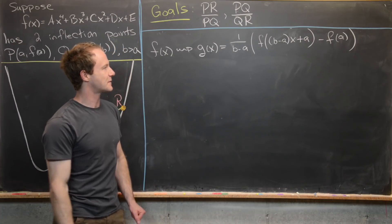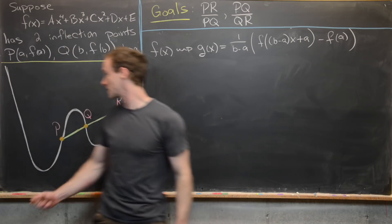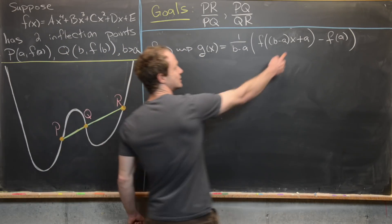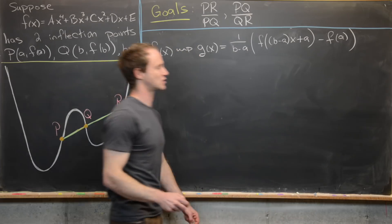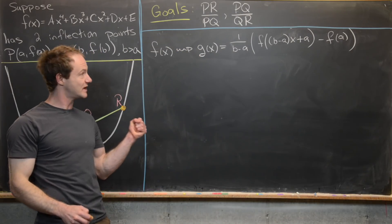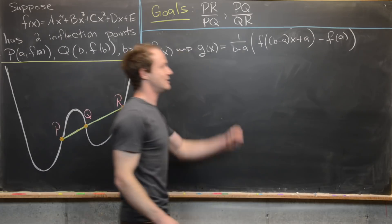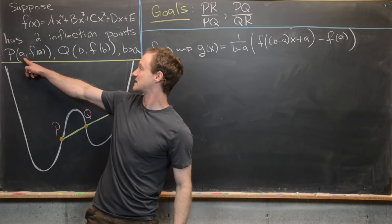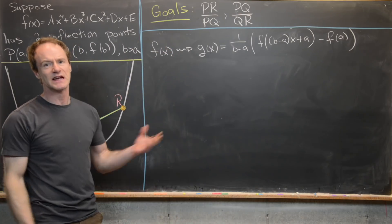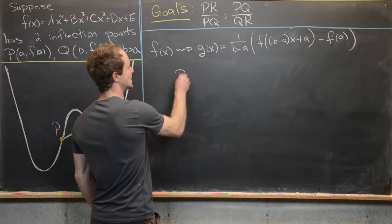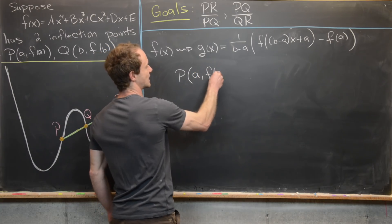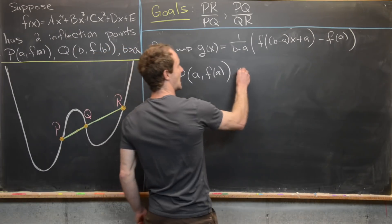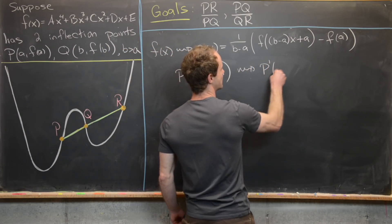This transformation shifts our original inflection point (A, F(A)) to the origin. The addition of A inside the argument shifts left by A units, and subtracting F(A) shifts down by F(A) units, placing the point exactly at the origin. So our original inflection point P at (A, F(A)) is shifted to the origin, which I call P′.